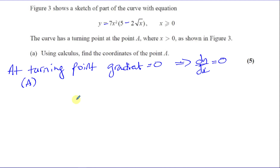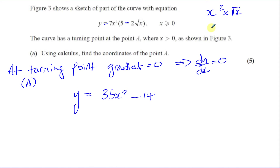Let's take this and differentiate it. First, let's write it out in a way we can differentiate easily — I'm going to multiply the brackets out. So 7x squared times 5 is 35x squared. Then 7x squared times minus 2 root x is minus 14, and x squared times x to the power of a half is x to the power of 5 over 2. So that gives us 35x squared minus 14x to the power of 5 over 2.